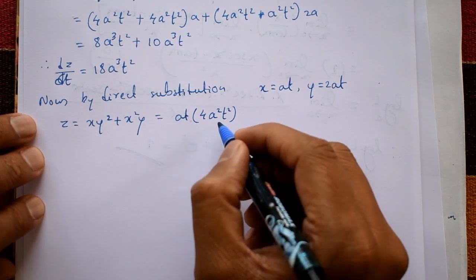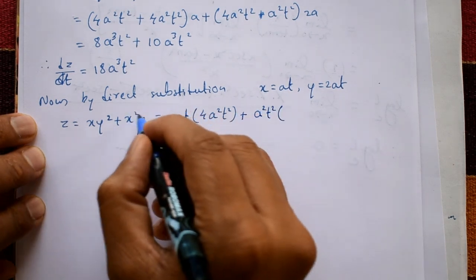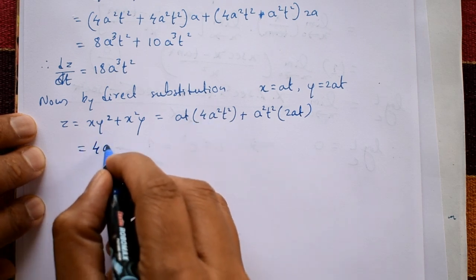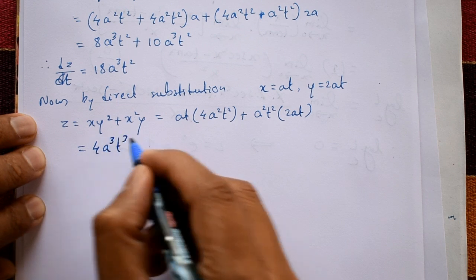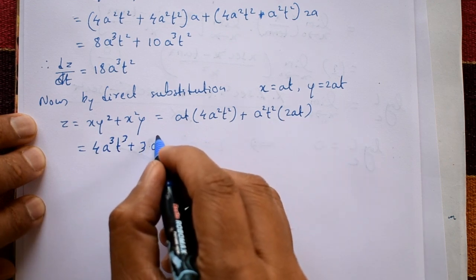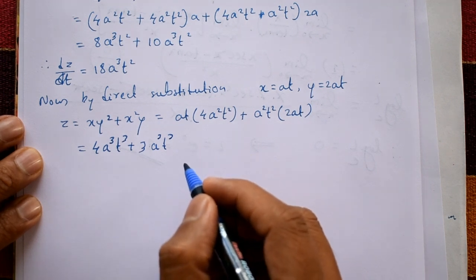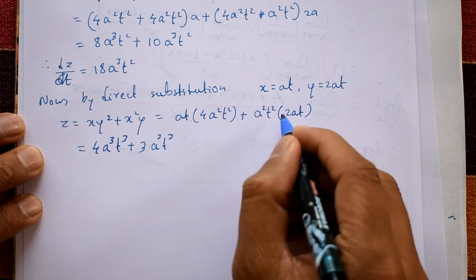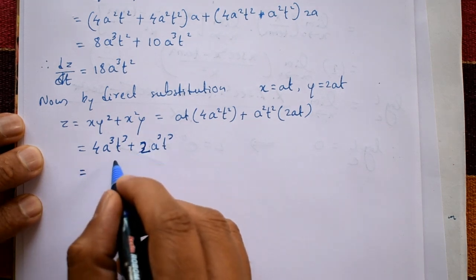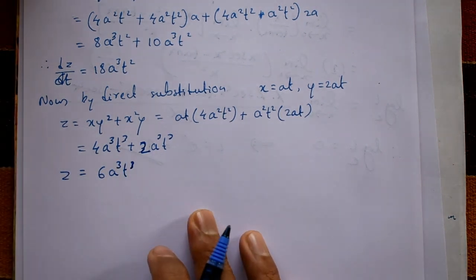Continuing: x²·y = (a²t²)·(2at) = 2a³t³. So z = 4a³t³ + 2a³t³ = 6a³t³. Therefore z = 6a³t³.